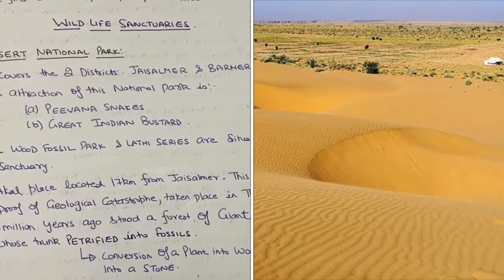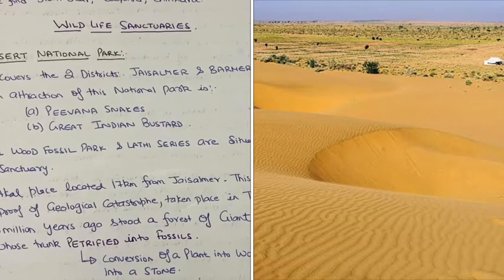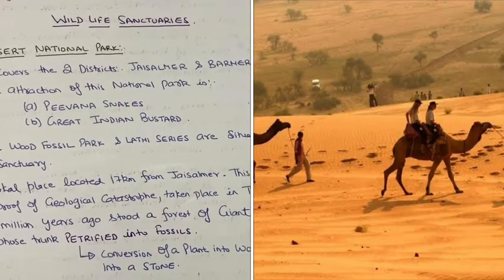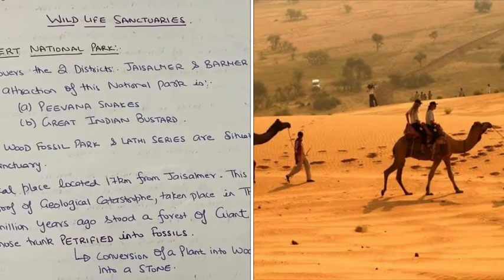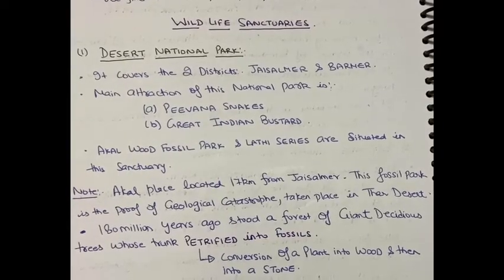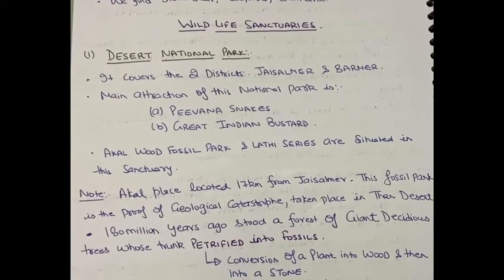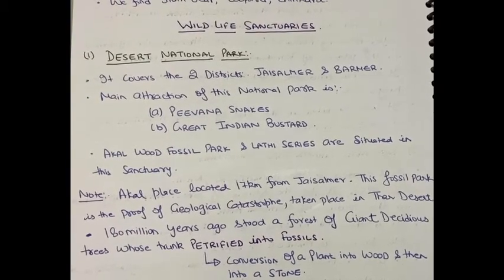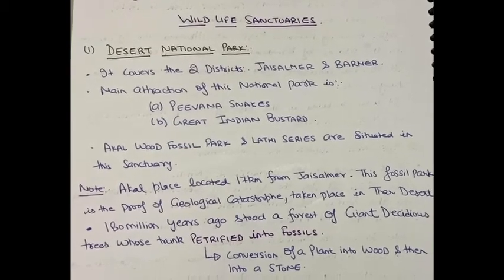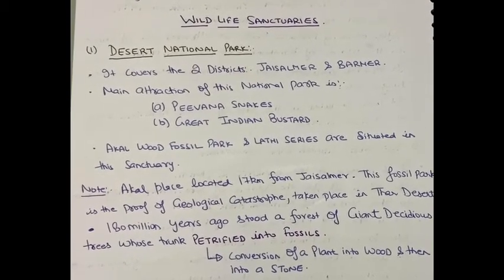Hello students. Till now we have discussed the three important national parks of Rajasthan: Ranthambhore National Park, Keoladeo Ghana National Park, and Mukundra Hills National Park. From this lecture, we are going to discuss the most important 10 wildlife sanctuaries in various parts, and today we are going to discuss the most important wildlife sanctuary known as Desert National Park.